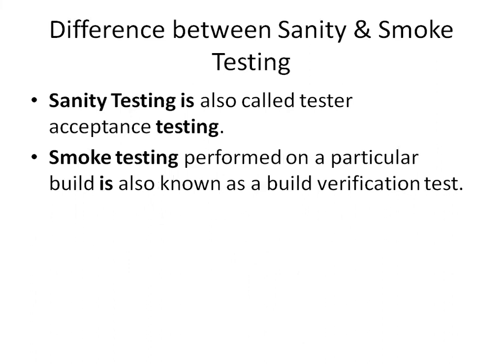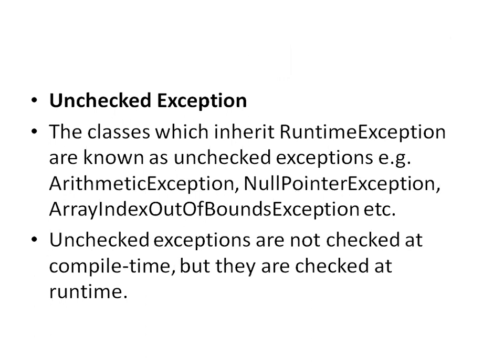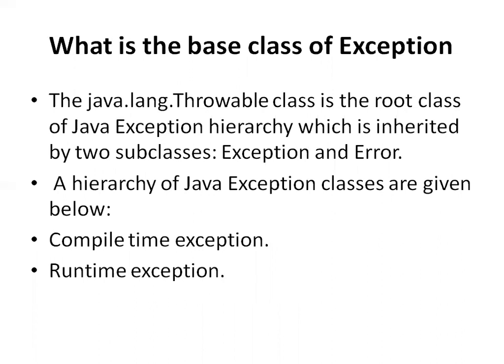This is a manual testing question that is also commonly asked: what is the difference between sanity and smoke testing? Smoke testing is a build verification test performed on a particular build, while sanity testing is also called tester acceptance testing. Smoke testing covers just the upper-level areas of the application, while sanity testing is a more detailed, deep level of testing. Thank you for watching. If you have interview questions from various companies, please share them at RD Automation Learning at gmail.com so we can share with the community. Stay tuned for more updates.